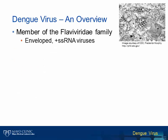Dengue virus is a member of the flavivirus family of viruses, which also includes West Nile virus, St. Louis encephalitis virus, and yellow fever virus, among others. These are all enveloped, positive-sense, single-stranded RNA viruses.